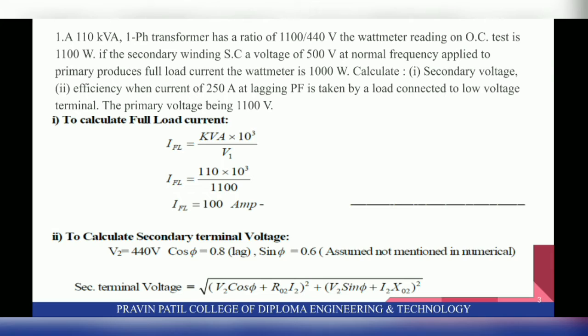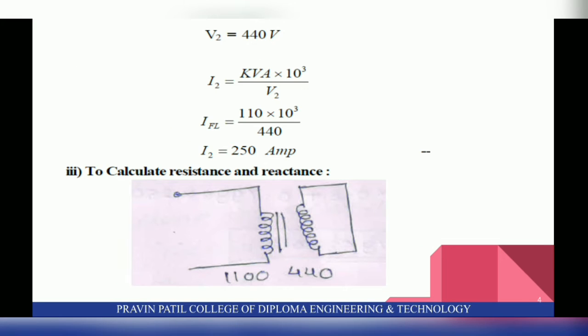Next, you have to calculate secondary terminal voltage. So V2 is equal to 440 V. Cos φ is 0.8, Sin φ is 0.6. The secondary terminal voltage formula is: √[(V2 cos φ + R02·I2)² + (V2 sin φ + I2·X02)²]. Here I2 = kVA × 10³ / V2 = 110 × 10³ / 440, so I2 is equal to 250 Ampere.